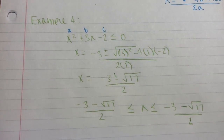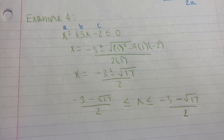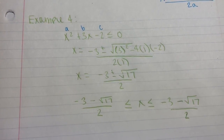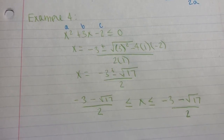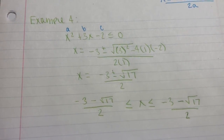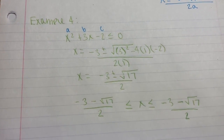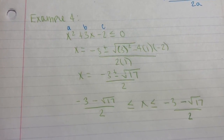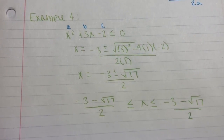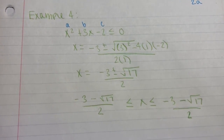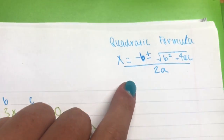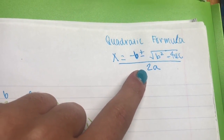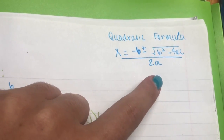Our fourth example is x² + 3x − 2 ≥ 0. We can either plug it into the calculator and graph it or use the quadratic formula. Here, the graph would be hard to read, so the quadratic formula is easier. The quadratic formula is: x = (−b ± √(b² − 4ac)) / 2a.